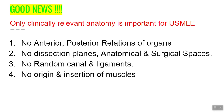For example, they are not going to ask you about anterior or posterior relations of organs — what lies posterior to the liver or lateral to the pancreas. Similarly, no dissection planes and anatomical or surgical spaces, so you don't need to know the plane in which abdominal surgery is performed. No random canals and ligaments, like the ligament of Treitz or falciform ligament. And finally, no origin and insertion of muscles — nobody is going to ask you where the origin of extensor carpi radialis longus is.